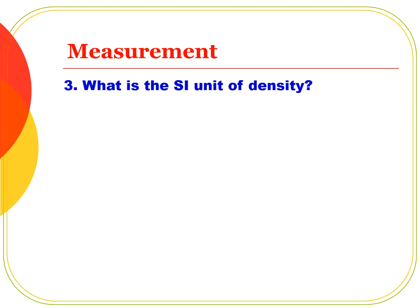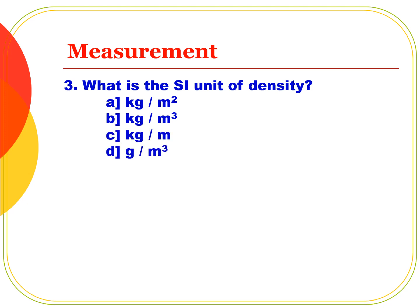Next question: What is the SI unit of density? Option A: kilogram per meter square. Option B: kilogram per meter cube. Option C: kilogram per meter cube. Option D: gram per meter cube. The correct answer is Option B, kilogram per cubic meter. Density = Mass divided by Volume. SI unit of mass is kilogram, SI unit of volume is cubic meter (m³), so SI unit of density is kg/m³.